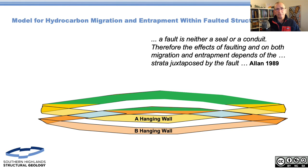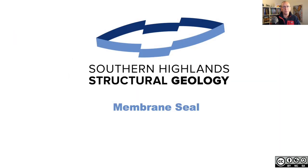So a fault is neither seal nor conduit - the effects of faulting on migration and entrapment depend on the strata juxtaposed by the fault. Really what he's talking about is basin modeling and fault seal analysis. I think it's really important when we're doing our analysis to do this simple bit of geometry.